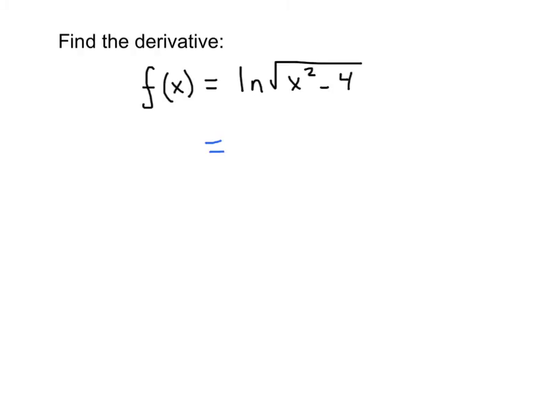I think you'll agree that we can rewrite this radical sign as an exponent, so we can do natural log of x squared minus 4 raised to the 1/2. And then by the rules of logarithms we bring that 1/2 out in front here, so our function becomes 1/2 times the natural log of x squared minus 4.